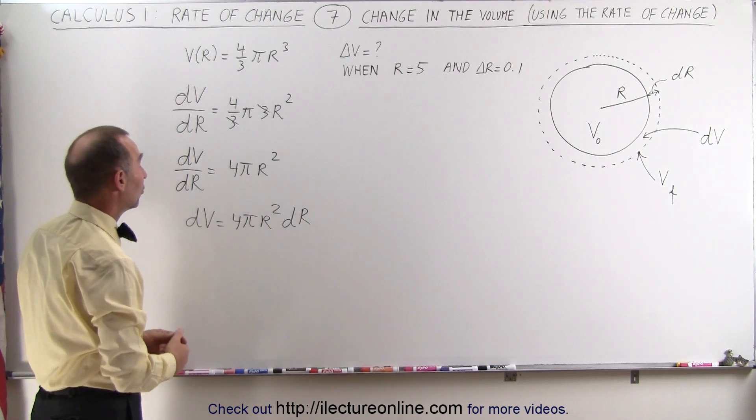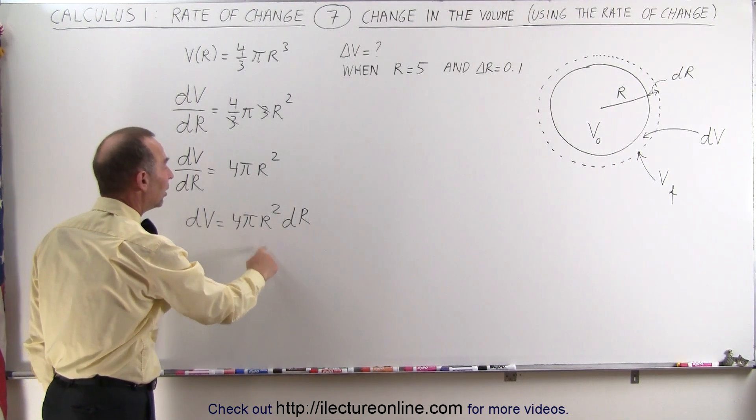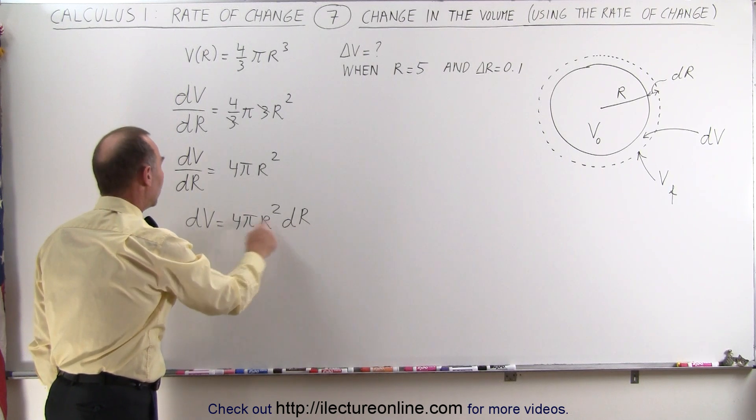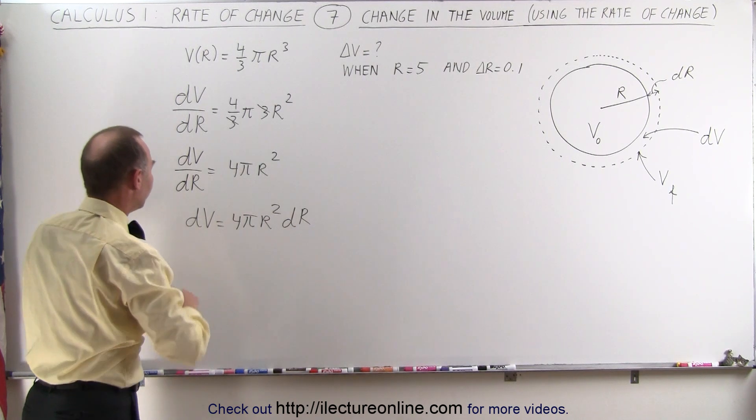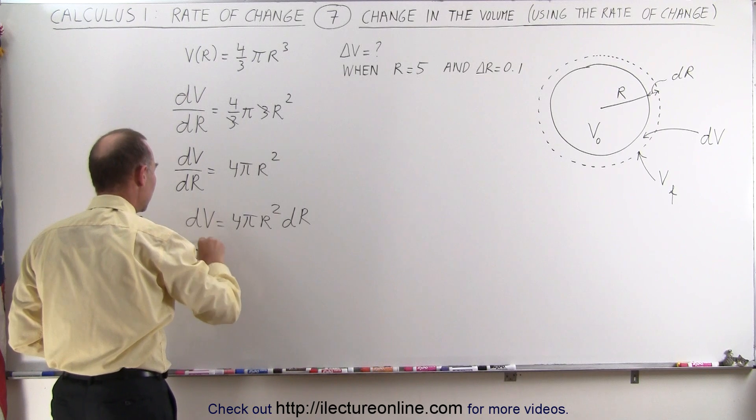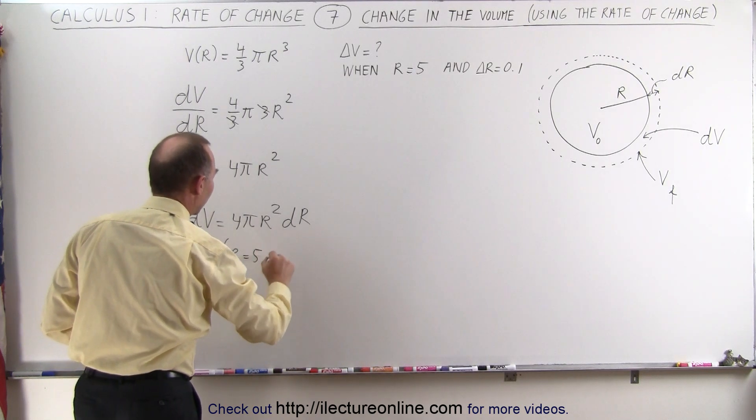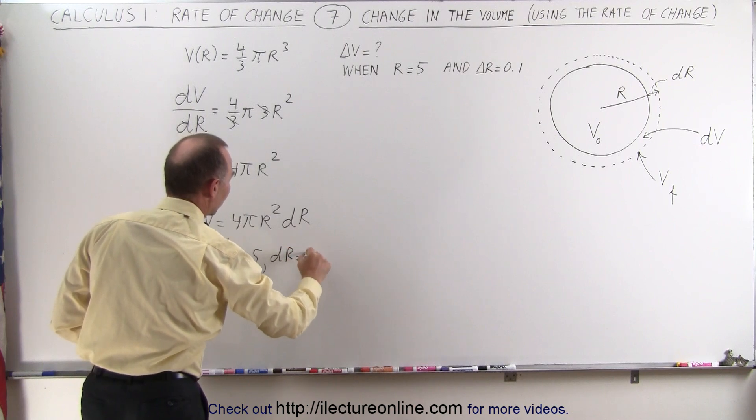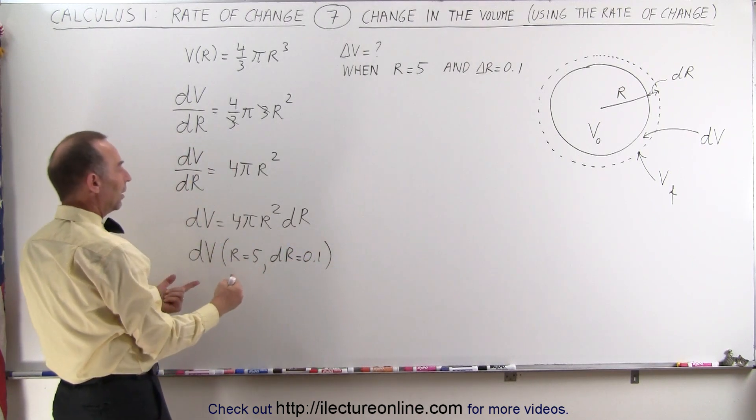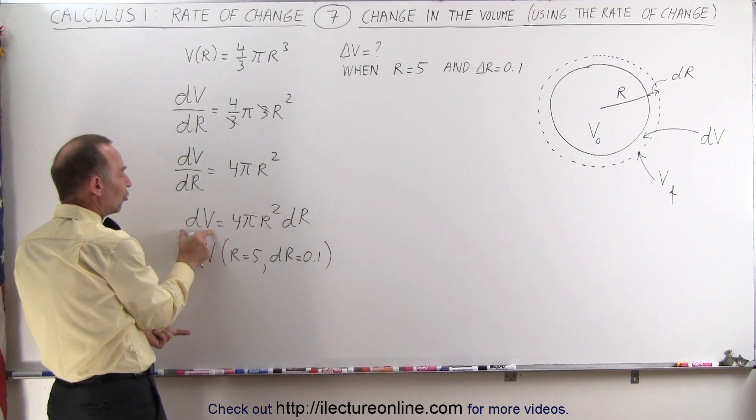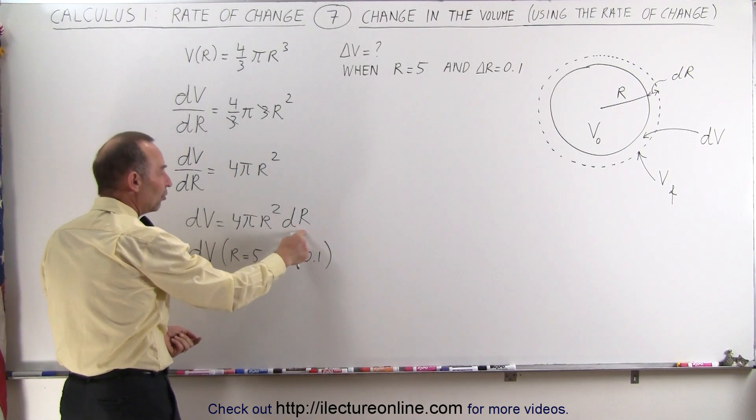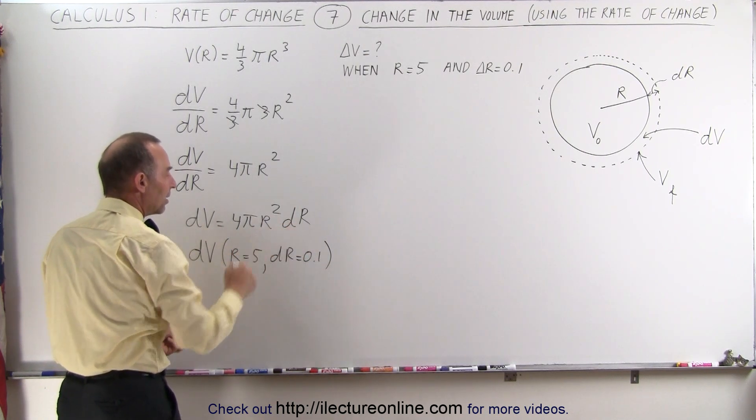So what we're going to do now is we're going to plug in the value for r and the value for dr to get the change in the volume. So the dV when r is equal to 5 and dr is equal to 0.1. So literally what I'm doing now is I'm evaluating this change in the volume by plugging in these specific values for r and dr.